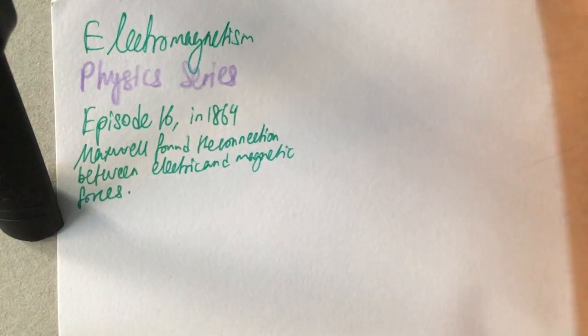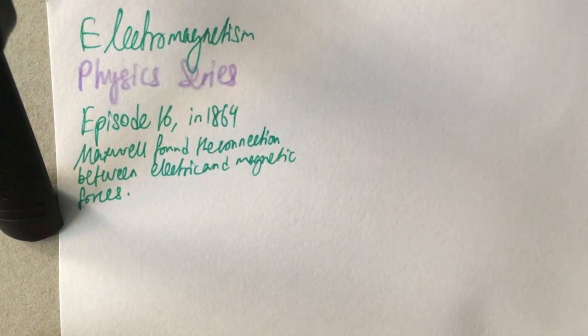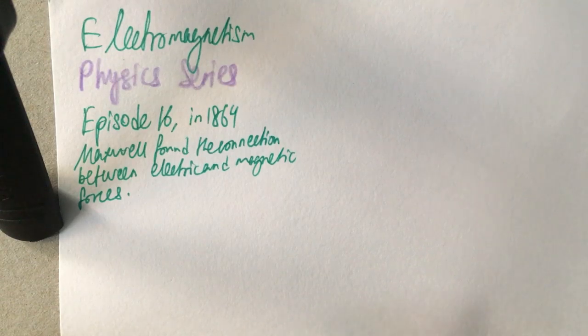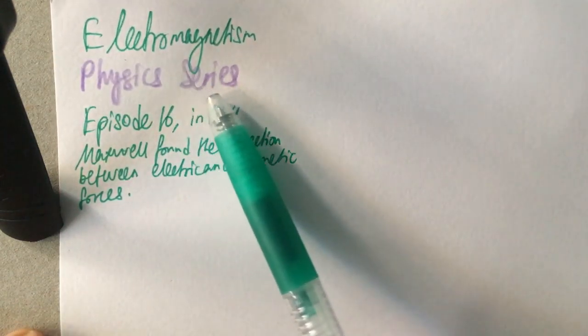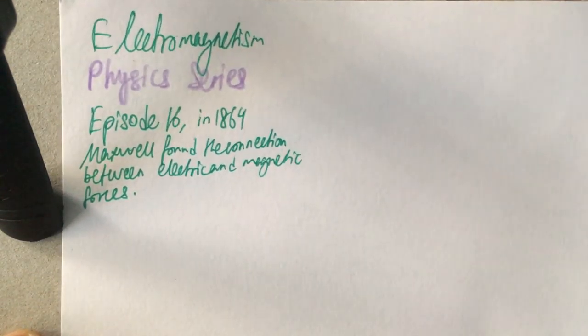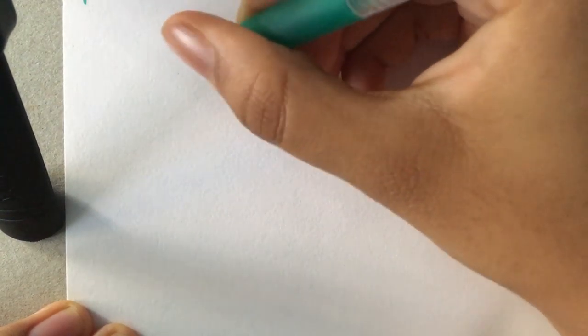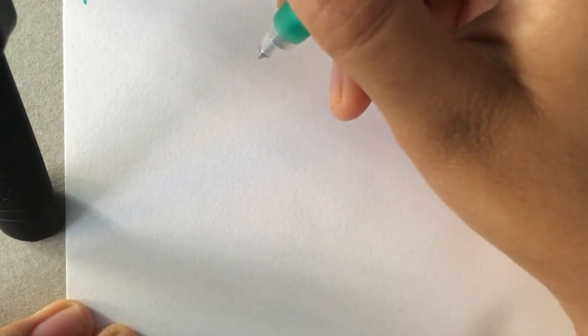Hello everyone, welcome back to Alkaline Hydroxide 784. Today we will be covering electromagnetism in the physics series. So far we have looked at electricity itself, and now we are looking at the interaction between electricity and magnetic fields. Once again, I'll go through all the learning outcomes and let's see how it goes.